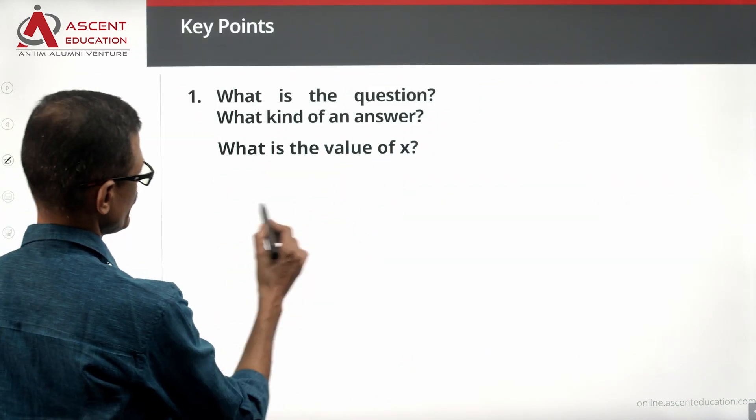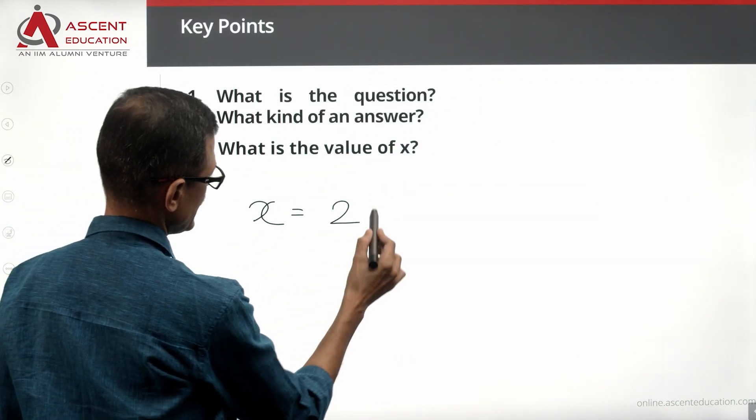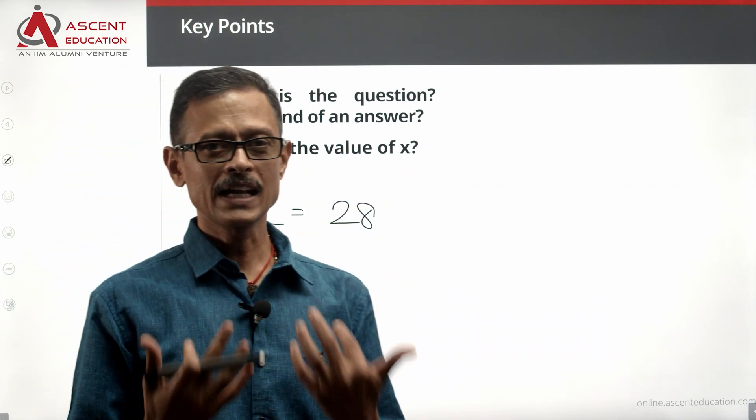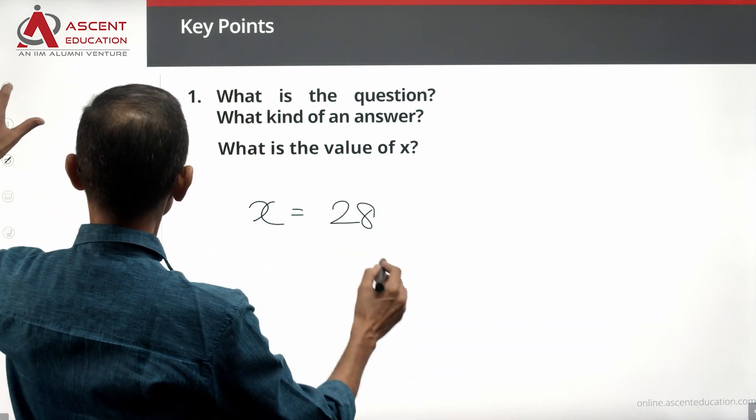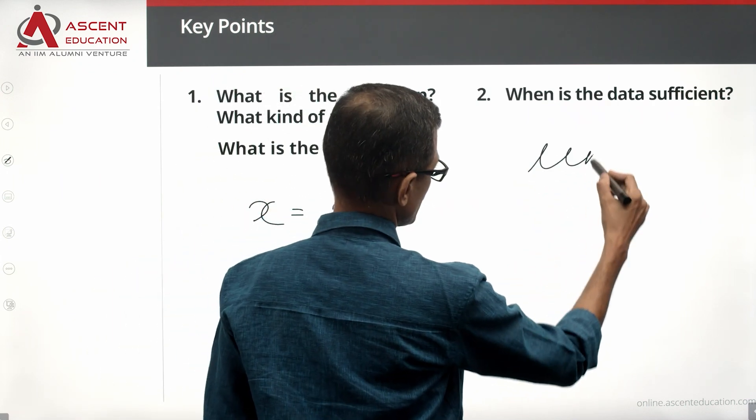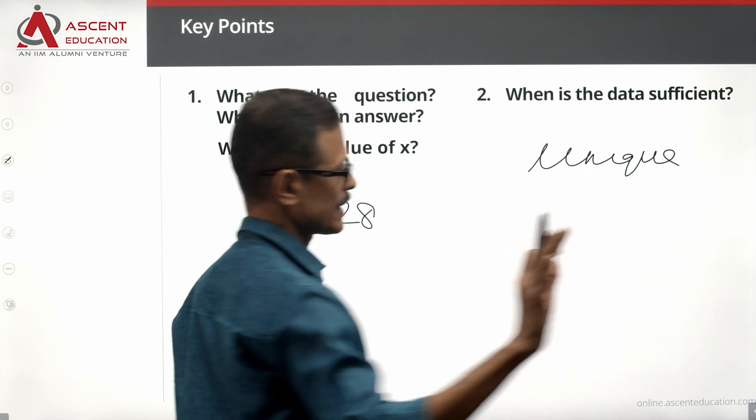What is the question? What is the value of X? For example, X is equal to 28, X is equal to 33. If the answer to the question is a number, we know the data is sufficient when we have a unique value. This much is known. Start with statement 1.